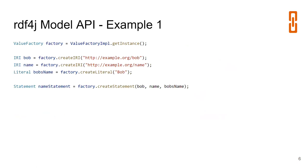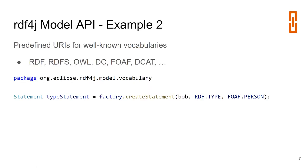To create triples in Java, this library uses the factory pattern. First you get a factory, and then based on this factory you can create objects of type IRI, Literal, BlankNode, and so on. Here we create an IRI for Bob, an IRI for the predicate 'name', and a simple string literal with the value 'Bob'. We put those three into a Statement — saying that Bob has a name and Bob's name is 'Bob'.